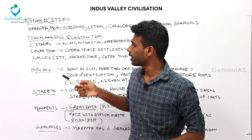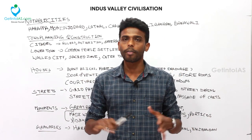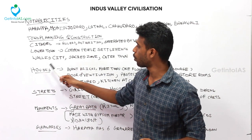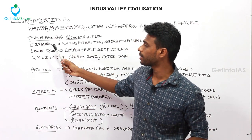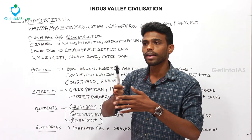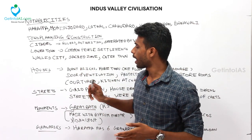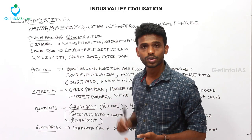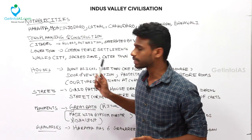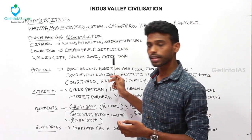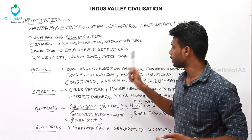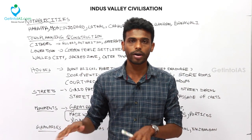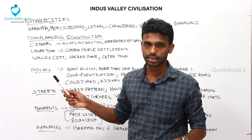In some cities, the layout was further divided into a walled city, sacred zone, and outer town. The citadel and lower town were separated by a high wall. The walled city had a large population; the sacred zone was where ruling authorities or kings lived; the outer town was where farmers and artisans lived.